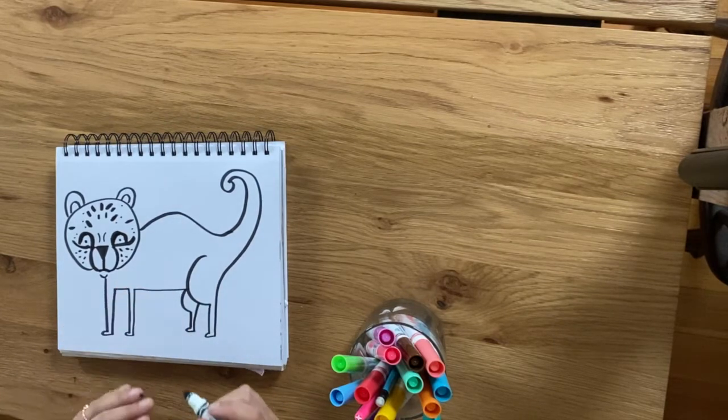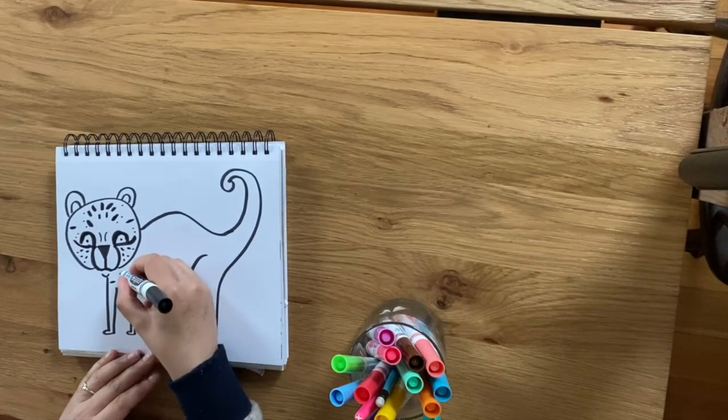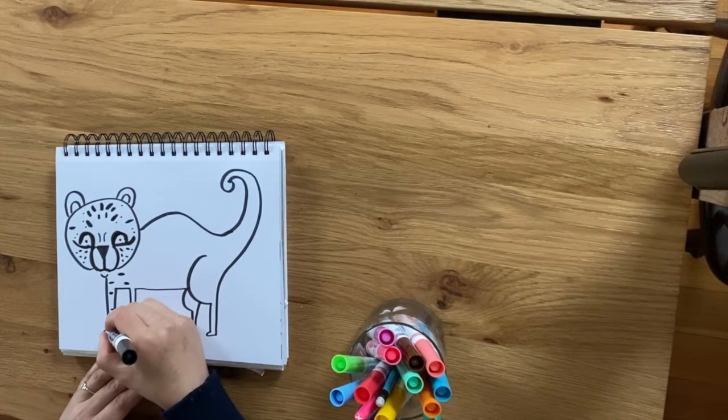Now, of course, our cheetah needs to have spots on its body. So you can go ahead and add different ovals or circles for our cheetah.